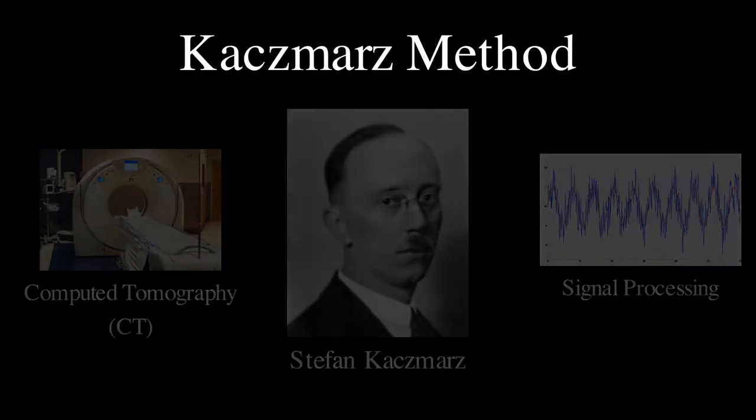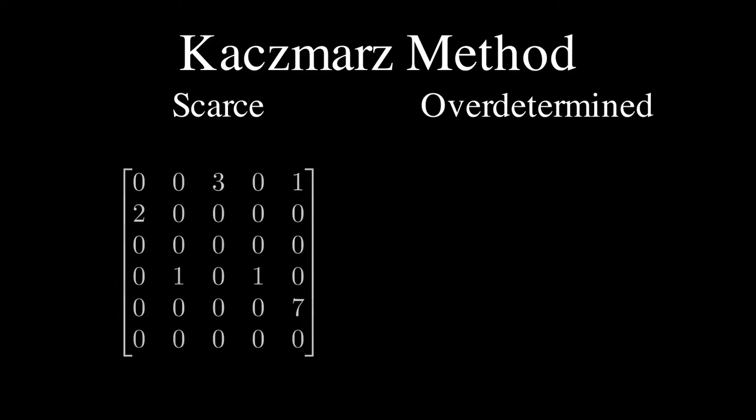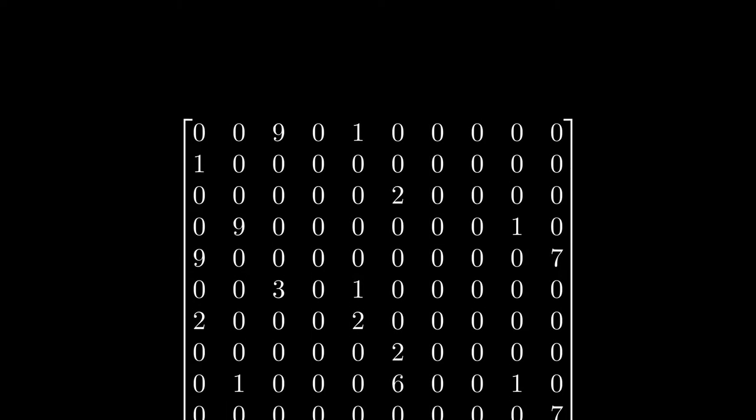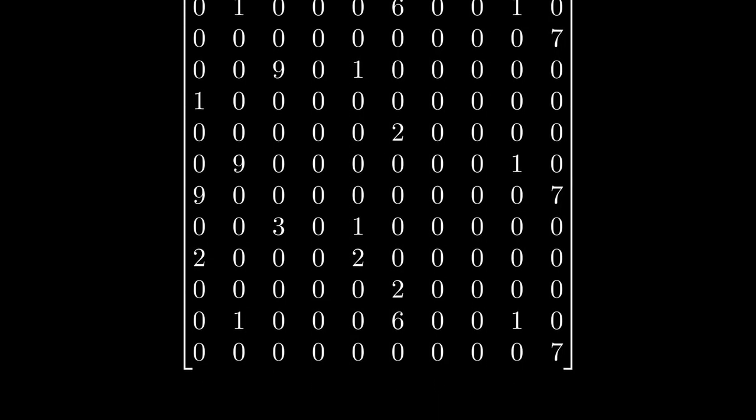The Kaczmarz method is especially great for matrices that are sparse and overdetermined. A sparse matrix has a lot more zeros than other values, and an overdetermined matrix has a lot more rows than columns, meaning it is substantially taller than it is wide. So if your data looks like this, Kaczmarz method would be a great choice.